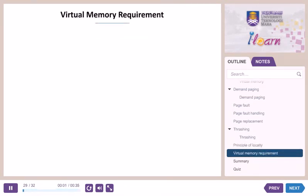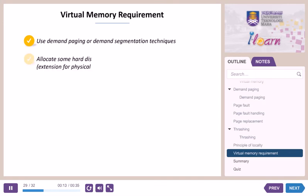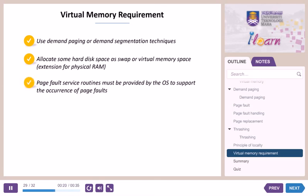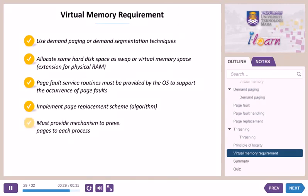Virtual memory requirements. The requirements of virtual memory include: using demand paging or demand segmentation techniques; allocating some hard disk space as swap or virtual memory space as an extension for physical RAM; providing mechanisms to prevent thrashing by allocating enough pages to each process; implementing a page replacement scheme or algorithm; and providing page fault service routines by the OS to support the occurrence of page faults.